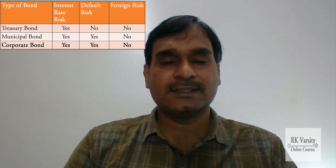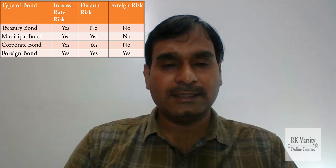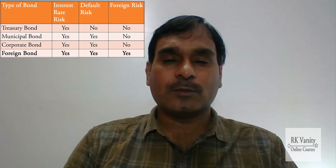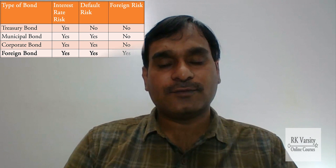Corporate bonds also attract interest rate risk and default or credit risk. If issued in a domestic country, there is no exchange rate risk. Finally, foreign bonds — bonds issued in a foreign country by governments or corporates — attract all three types of risks: interest rate risk, default risk, and foreign exchange rate risk. This is how we can relate the three different types of risk with the four classifications of bonds.